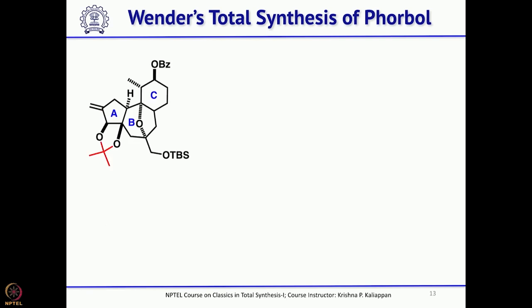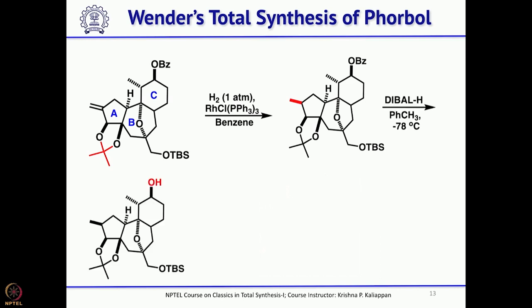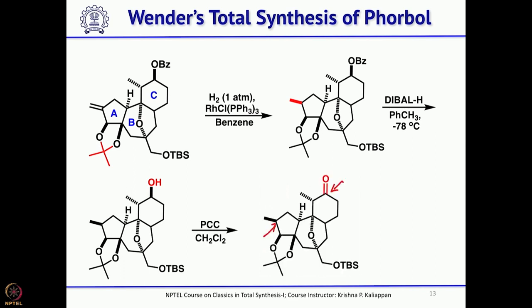From there, the double bond was reduced using Wilkinson's catalyst to give high selectivity for the beta-methyl. The benzoate was then reductively removed with DIBAL to give the alcohol, and the alcohol was oxidized with PCC to the ketone. The next objective was to introduce the dimethylcyclopropane and a hydroxyl group.